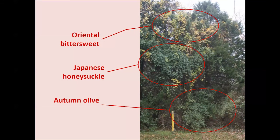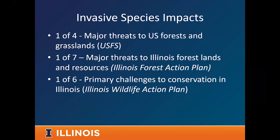Invasive species are becoming universally recognized as a big issue. In the U.S. alone they are considered one of the four major threats to our forests and grasslands, right up there with climate change and habitat loss. Our Illinois Forest Action Plan lists dealing with forest health issues including invasive species as one of seven major threats. The Illinois Wildlife Action Plan also considers invasive species one of six primary challenges to conserving rare and declining wildlife.